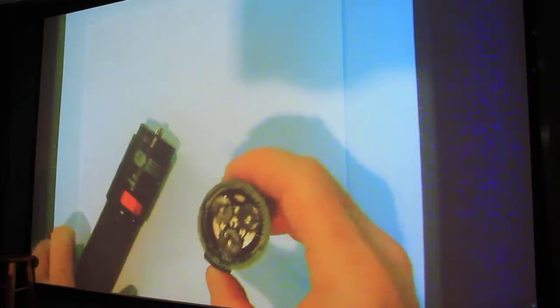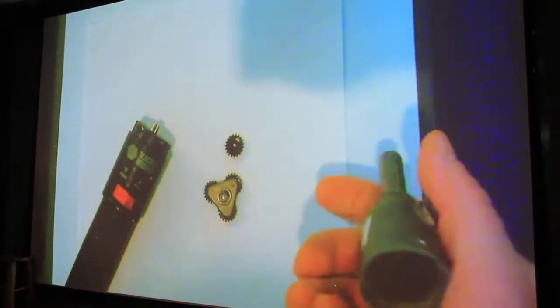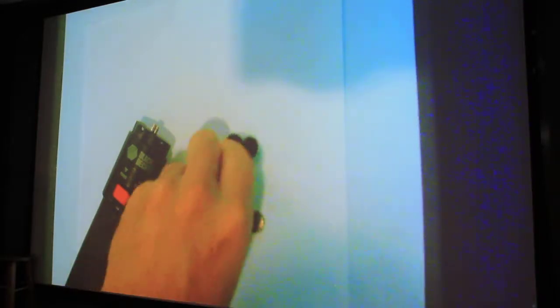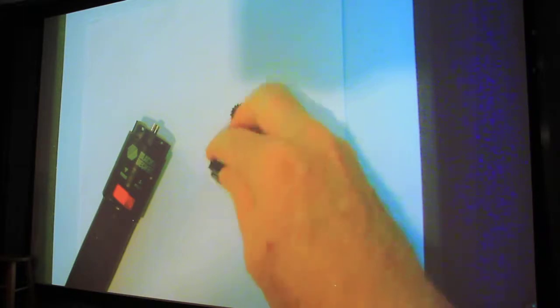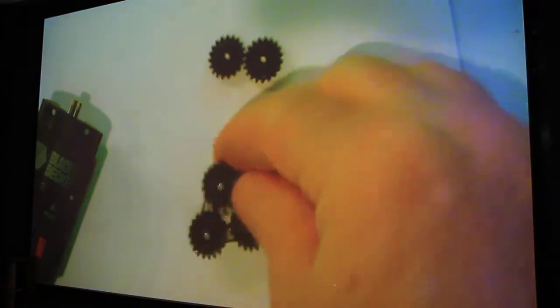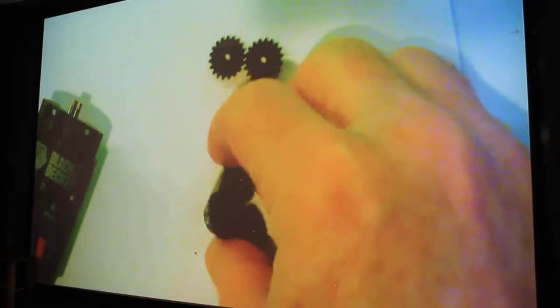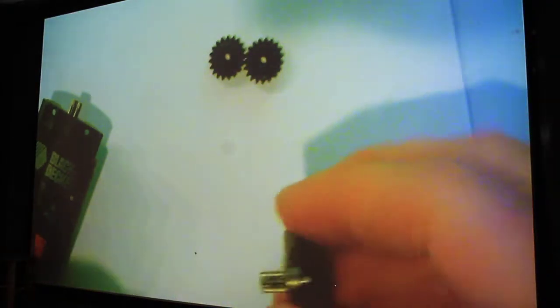But what happens if you take this thing apart here? Notice how you have two sets of planetary gears. So set one looks like this. Okay?